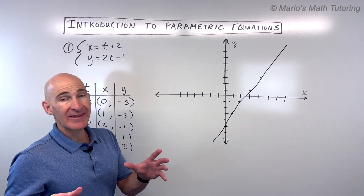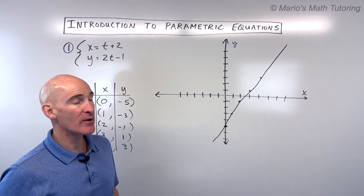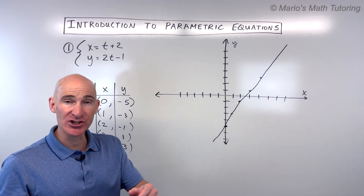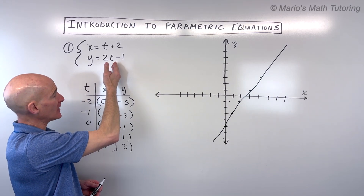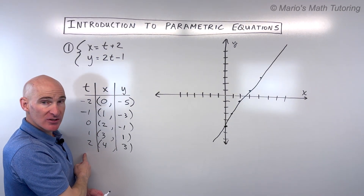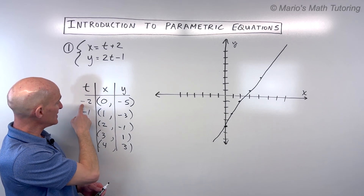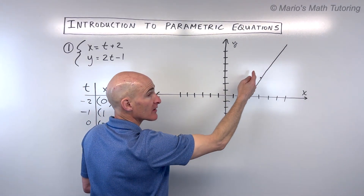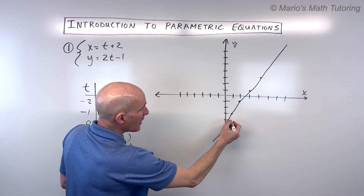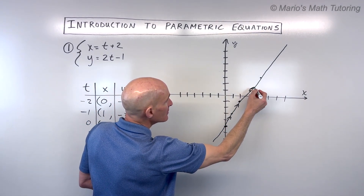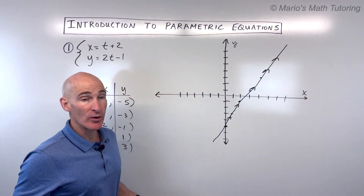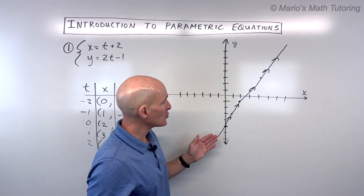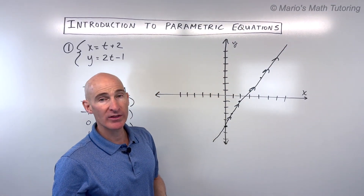What you want to do is show the orientation or the direction that this particle is traveling with increasing values of t or time. As t is getting larger, we were headed from this point to this point to this point. So we're going to draw arrows along the direction that this particle or object is traveling with increasing values of t. Don't put arrows on the end — just show the direction with increasing values of t.